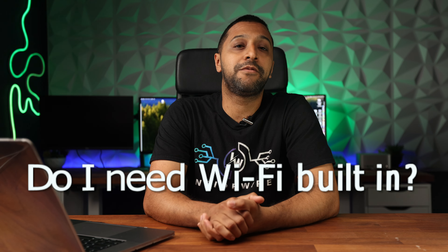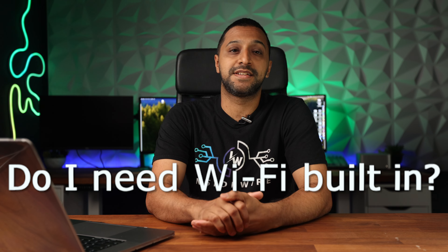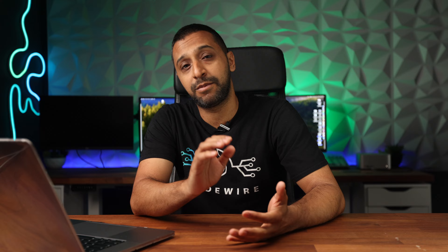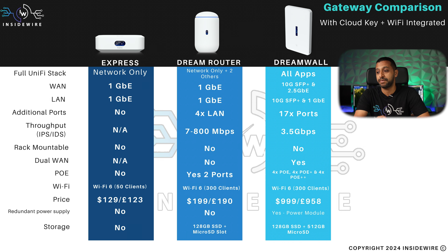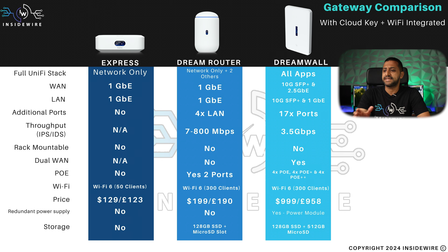The next question is: do I need Wi-Fi integrated? There are some units that have Wi-Fi integration built in — those are the UniFi Express, the DreamRouter and the DreamWall. Some of these have been out for a while; the DreamRouter has been out quite a while, and the DreamWall is coming up on about 12 to 18 months.